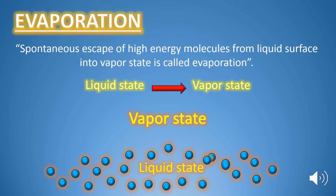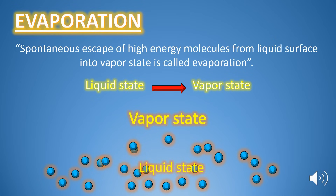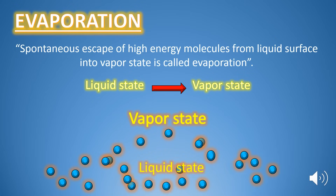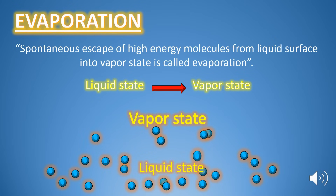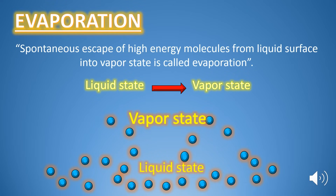What is evaporation? The spontaneous escape of the high energy molecules from the liquid surface into the vapor state is called evaporation. Or simply, evaporation is a process of the change of liquid to a gaseous state below its boiling point.